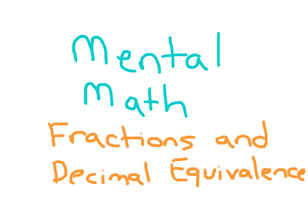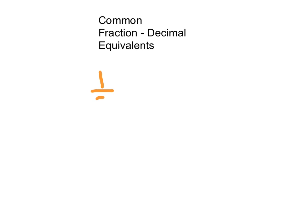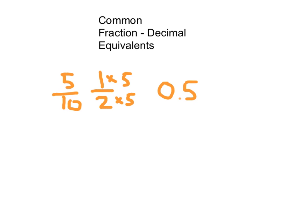It's time to look at mental math — Fractions and Decimal Equivalents. Here are some of your common fraction decimal equivalents. We have one half. One half is written as 0.5 in decimal form. We multiplied by 5 in the numerator and denominator to get 5 tenths, which is just what this is right here.